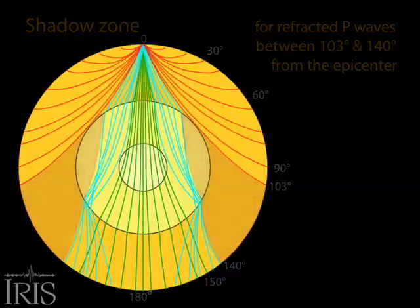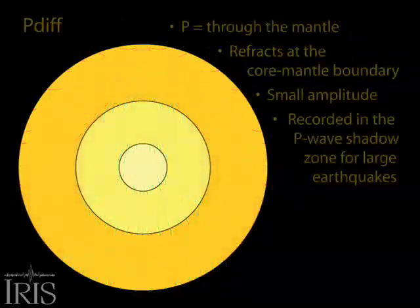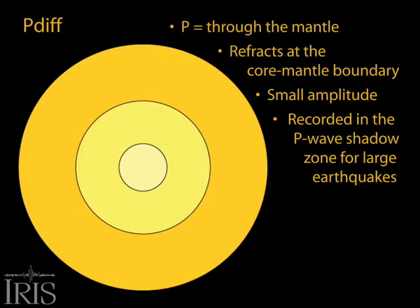However, compressional energy can arrive at seismometers in the P wave shadow zone. If the advancing P wave strikes the core mantle boundary at the proper angle, it will travel along the base of the mantle sending compressive energy back to the surface to seismometers within the shadow zone.